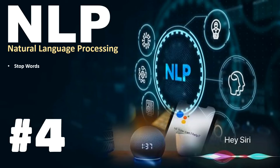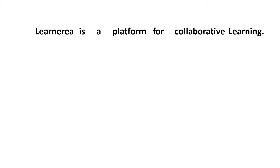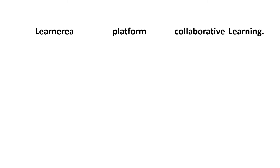Hello everybody. In this video of this series, we're going to learn about stop words. Words like 'is', 'a', 'for' are added to connect remaining words so that sentences make sense in human language — natural language. But in terms of machine learning, these words don't contribute much meaning, so what we do is remove them to make it simpler for a machine to learn, understand, and respond accordingly.